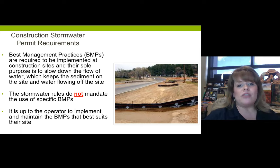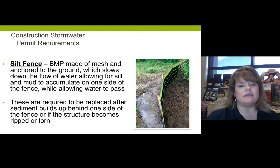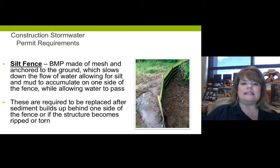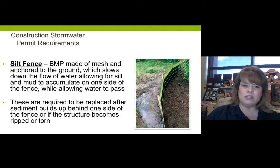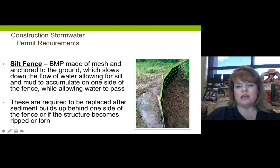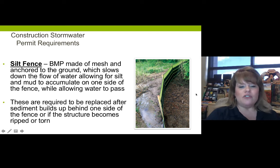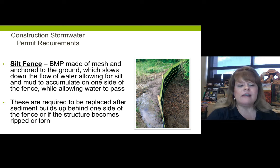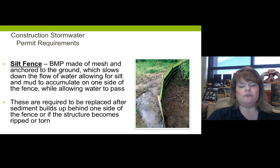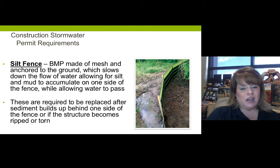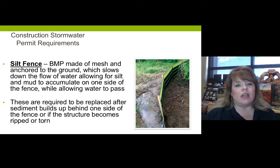Let's look at a couple of best management practices. The first one is a silt fence. Pretty easy concept: you put in this mesh material, anchor it in, and the mud gets held on one side and doesn't flow off the site while the water does. A silt fence is made of mesh anchored to the ground which slows the flow of water, allowing silt and mud to accumulate on one side while water passes the other. These are required to be replaced after sediment builds up or if the structure becomes ripped or torn — a torn fence won't be effective. So if you're using a silt fence, it needs to be managed and maintained.